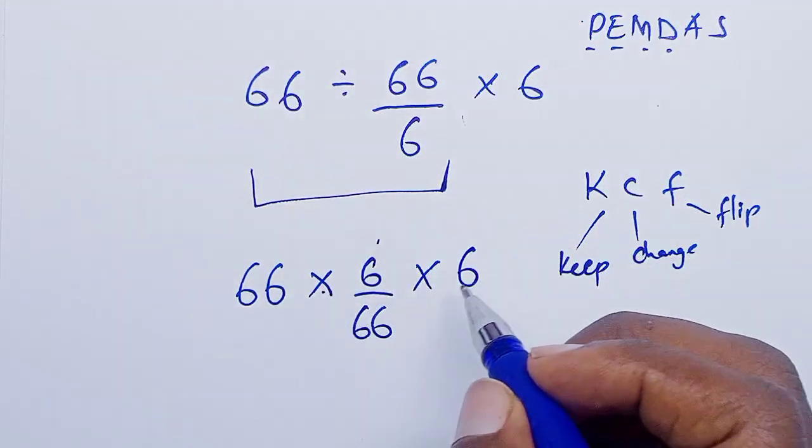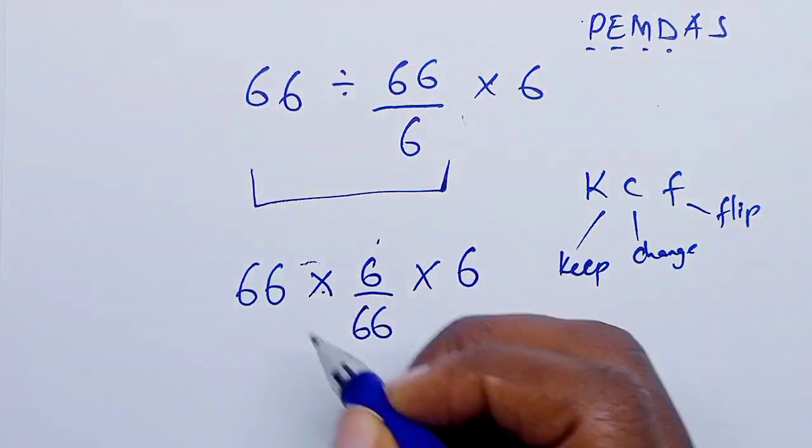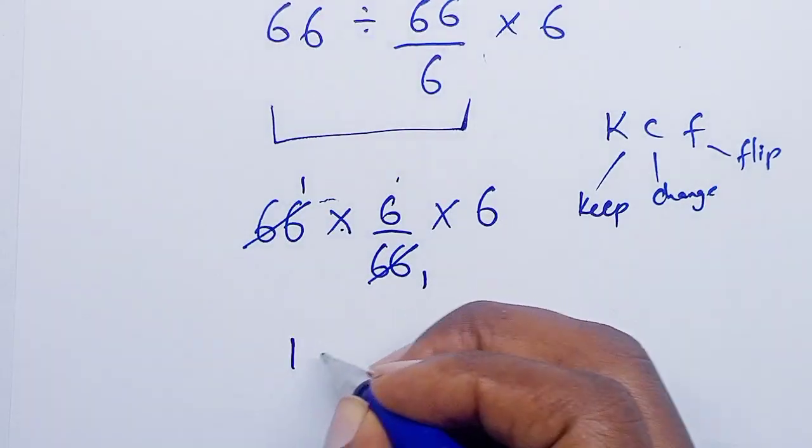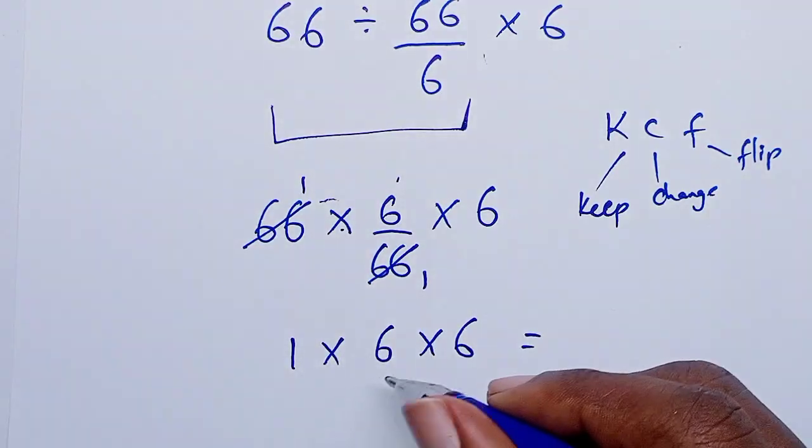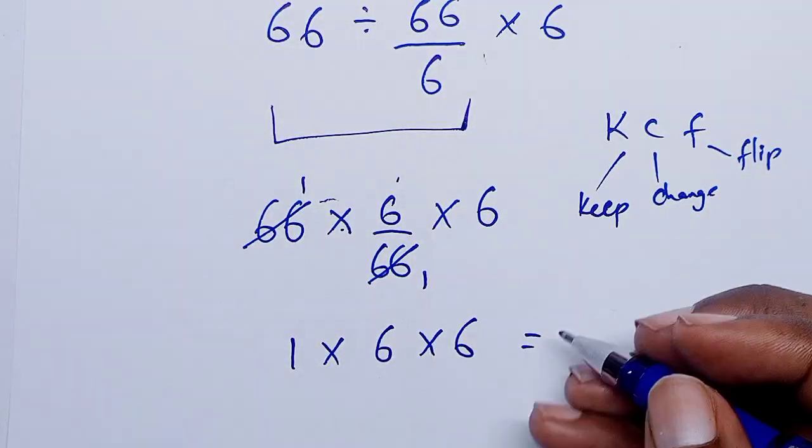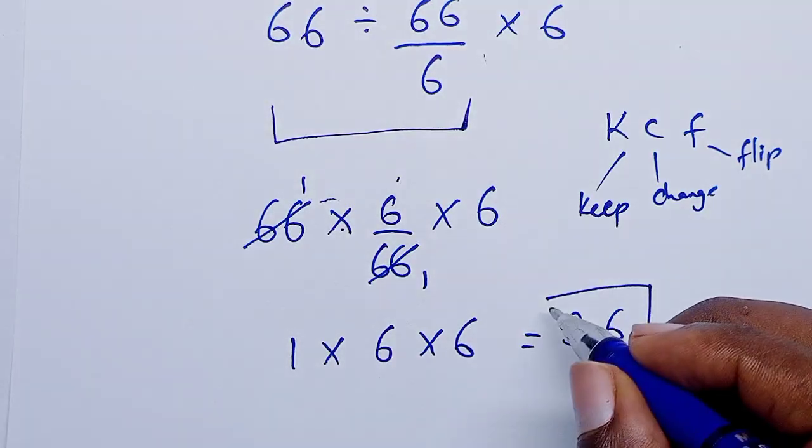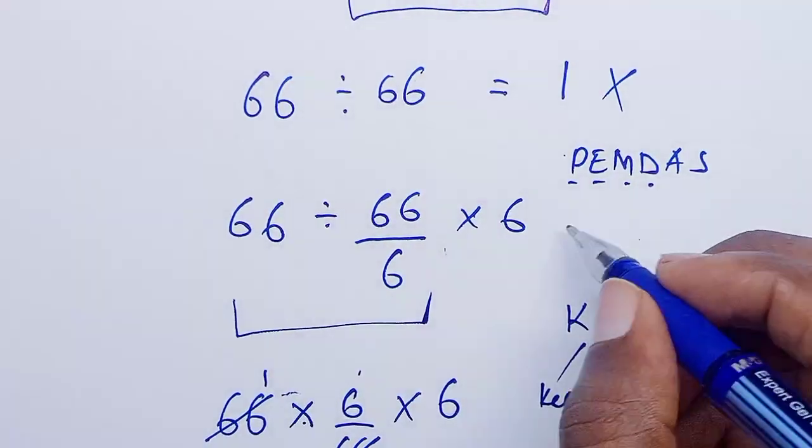So since here it's multiplication and multiplication, you can either divide this by this or this by this. This is easier because it totally cancels out. So we have 1 times 6 times 6, which equals 6 times 6 is 36. So 36 is actually the right answer for this.